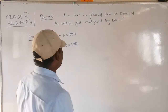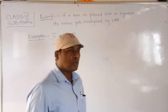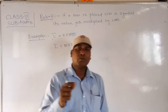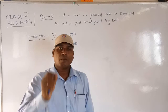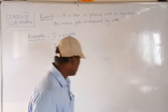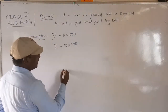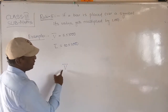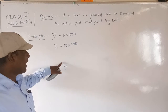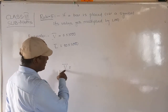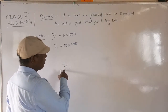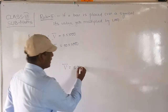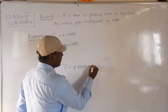Whenever we are writing 5000, we use a bar. For example, V with a bar over it — the bar means multiply by 1000. So V-bar means: V = 5, multiplied by 1000, equals 5000. Are you clear? Similarly, C with a bar: C means 100, multiplied by 1000, equals one lakh (100,000).